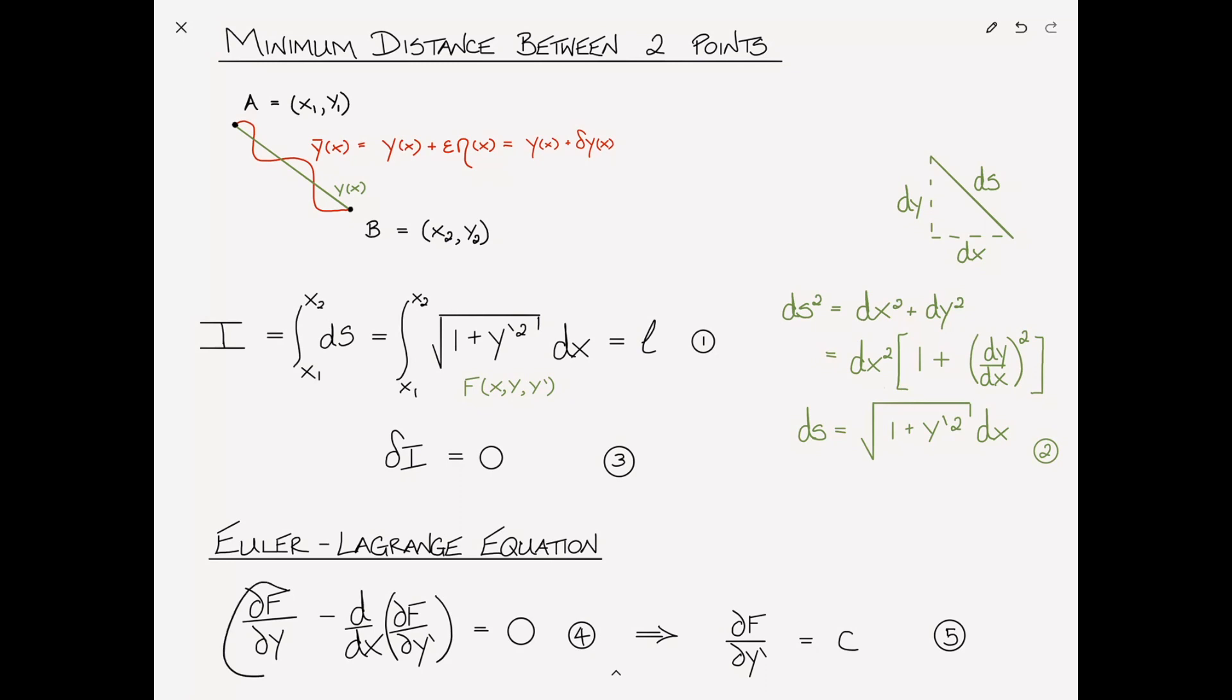Because the functional is not a function of y explicitly, that term cancels out, this first term. And as a result, the remaining term can be integrated with respect to x and yields that ∂f/∂y' is simply a constant. Why is this important? Well we'll see that on the next page.